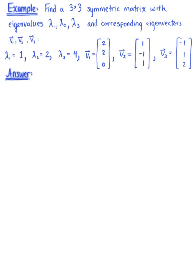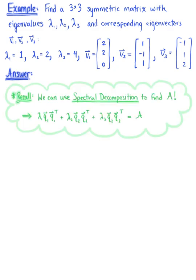Find a 3 by 3 symmetric matrix with eigenvalues lambda sub 1, lambda sub 2, lambda sub 3, and corresponding eigenvectors v sub 1, v sub 2, and v sub 3. We begin by recalling that we can use spectral decomposition to find a symmetric matrix A, using the linear combination representation of matrix A.